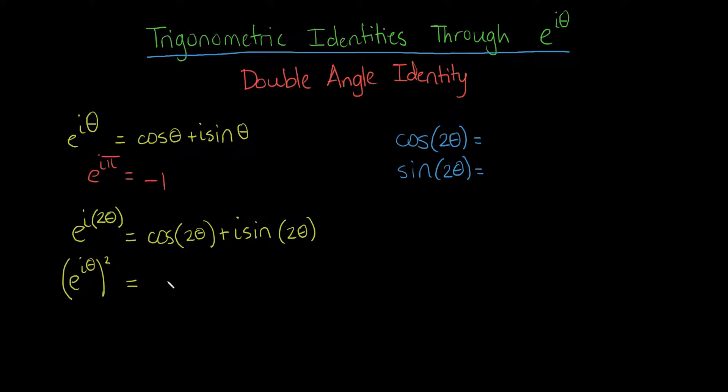And e to the i theta, squared is just, well, I don't even have to write it down again. I can just copy it from up here. It's just this squared. And knowing this, knowing that this value here equals this value here, we can set them equal to each other, and we can solve.